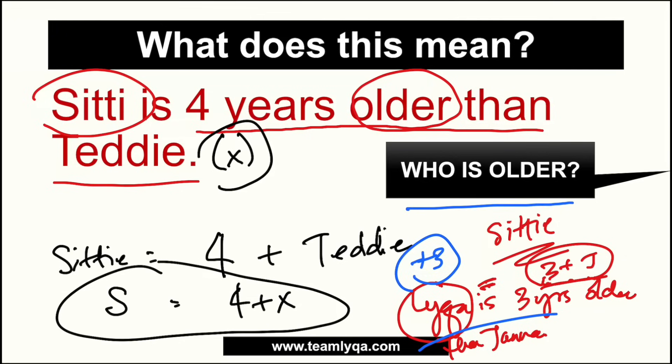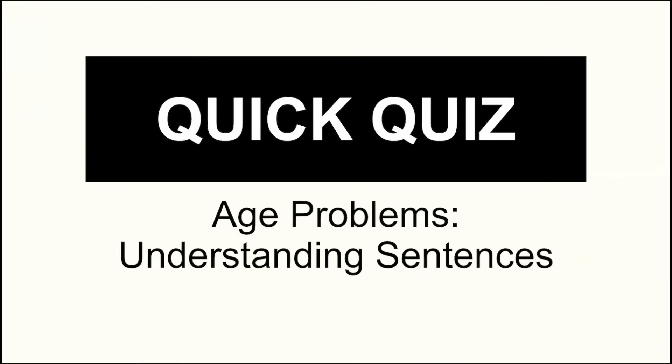Now let's try a quick quiz. I'm going to give you five statements, and I'll give you time to understand them and write the equation — just like we did with CT equal to four plus X, with X being Teddy's age. How would you write and break down each one? I'll give you a few minutes to dissect them properly. Write everything down, and then we'll solve it together after. If you're ready with your pen and paper, your timer starts now.